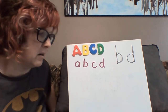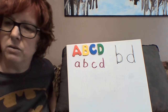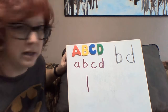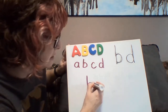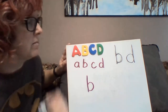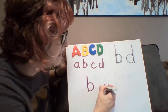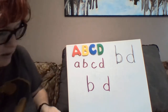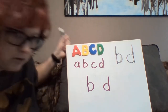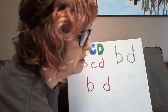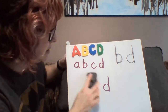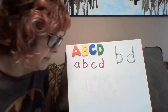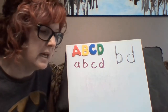Strategy number one: B always starts with a line. When you are drawing a b, you always start by drawing a line and then adding your circle. When you're writing a d, you always start with a circle and then add the line. That is one difference you can try to remember, and it might trigger something with kids when they're working on printing them.